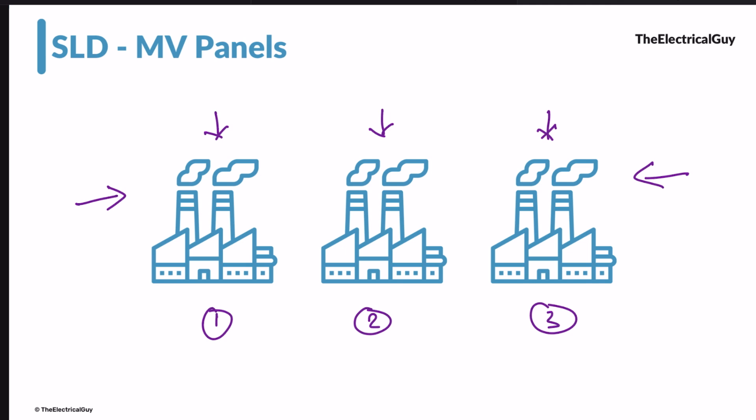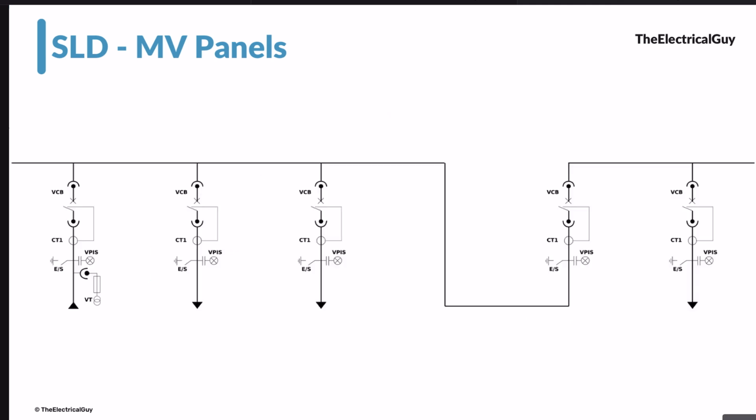With this understanding in mind, let us go and understand the single line diagram. This will give you a better idea of the single line diagram. Here is the single line diagram of the medium voltage switchgear panel. As mentioned, we have three different factory units and we need to provide supply to them.